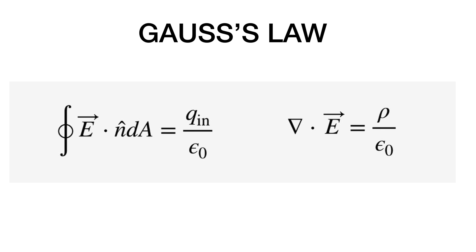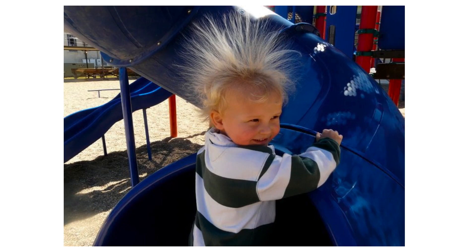But I'll just tell you right now. This says the closed integral of E dot n hat dA, which is the flux, that's the surface integral, is equal to the total charge inside that divided by epsilon naught. Okay, that didn't make any sense. But really this is what it's about.